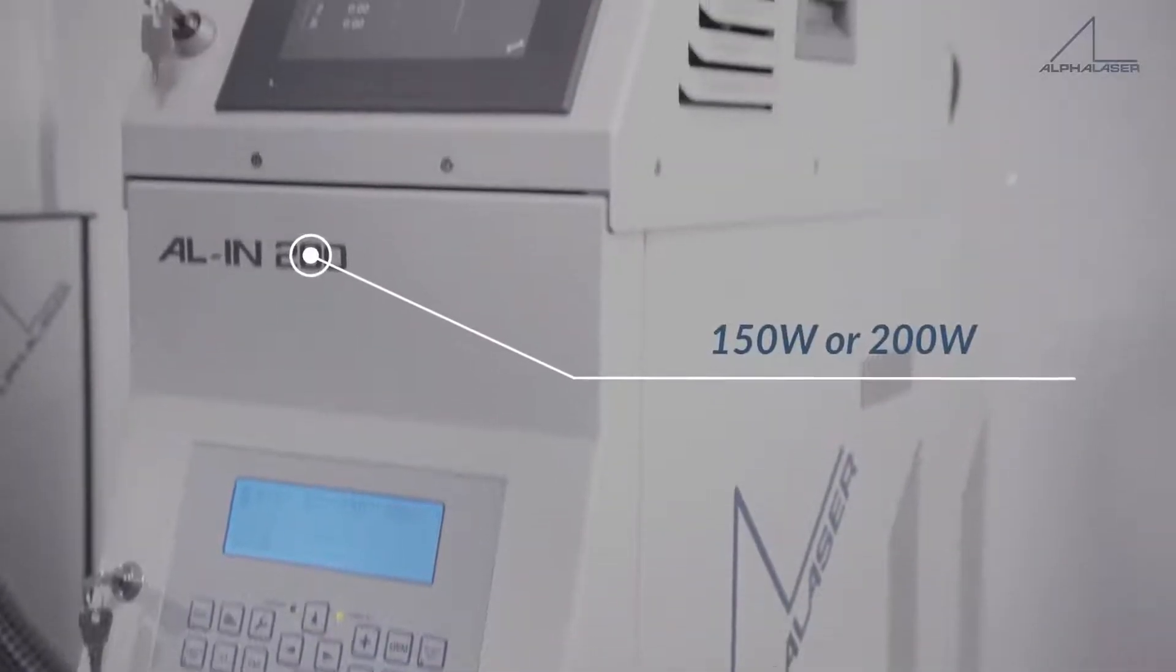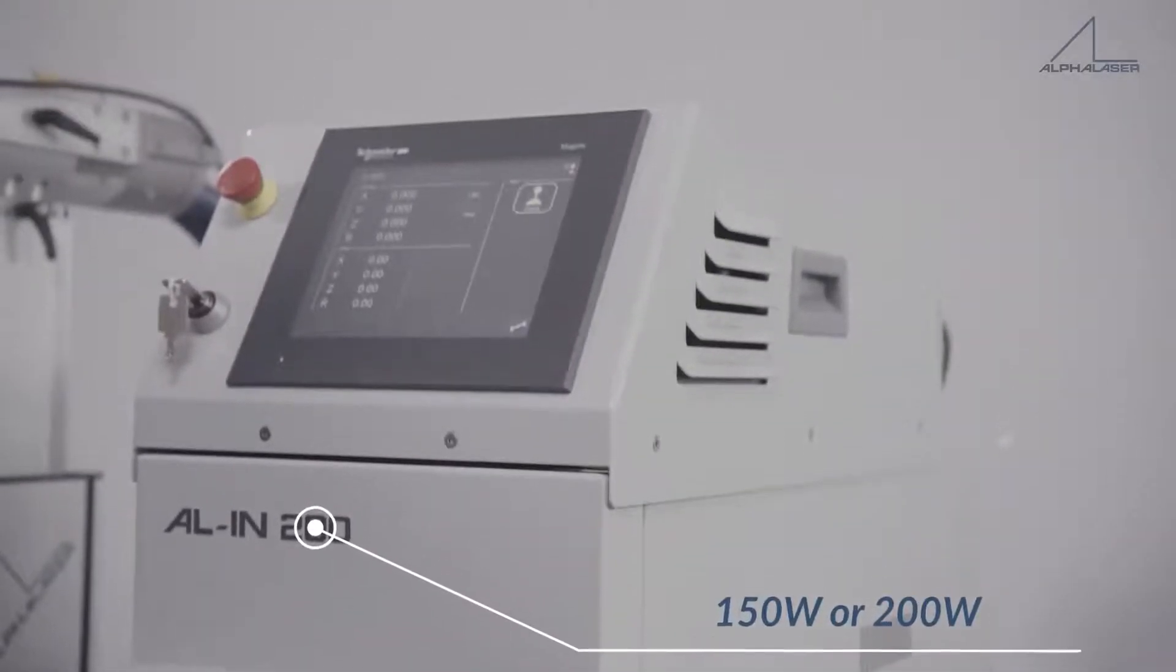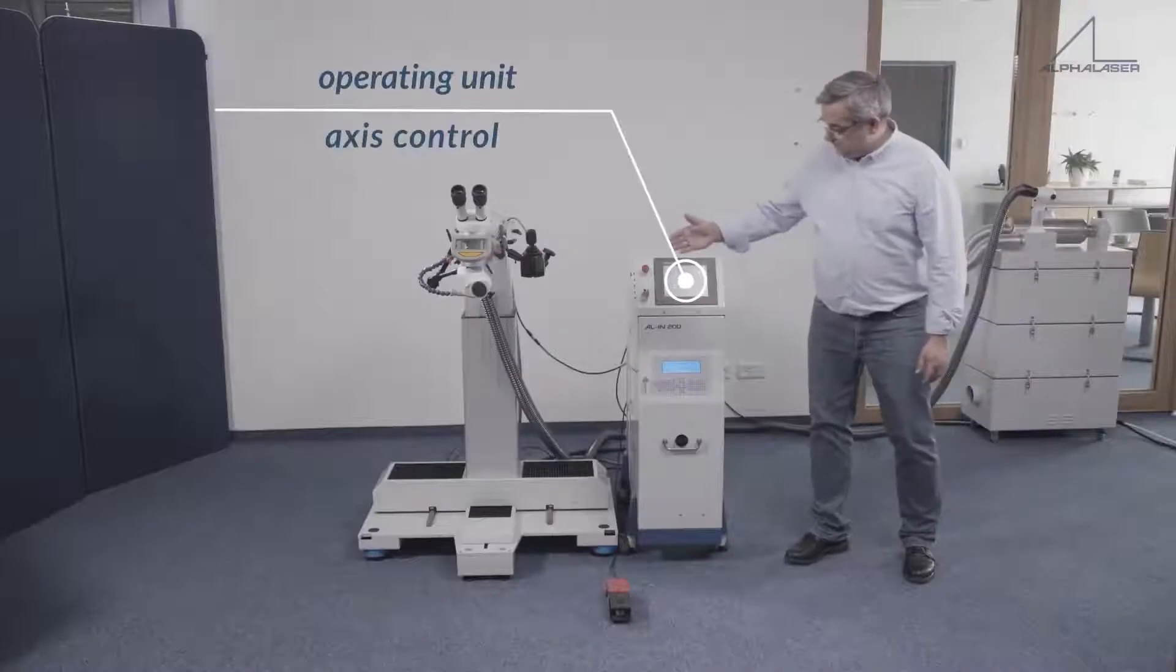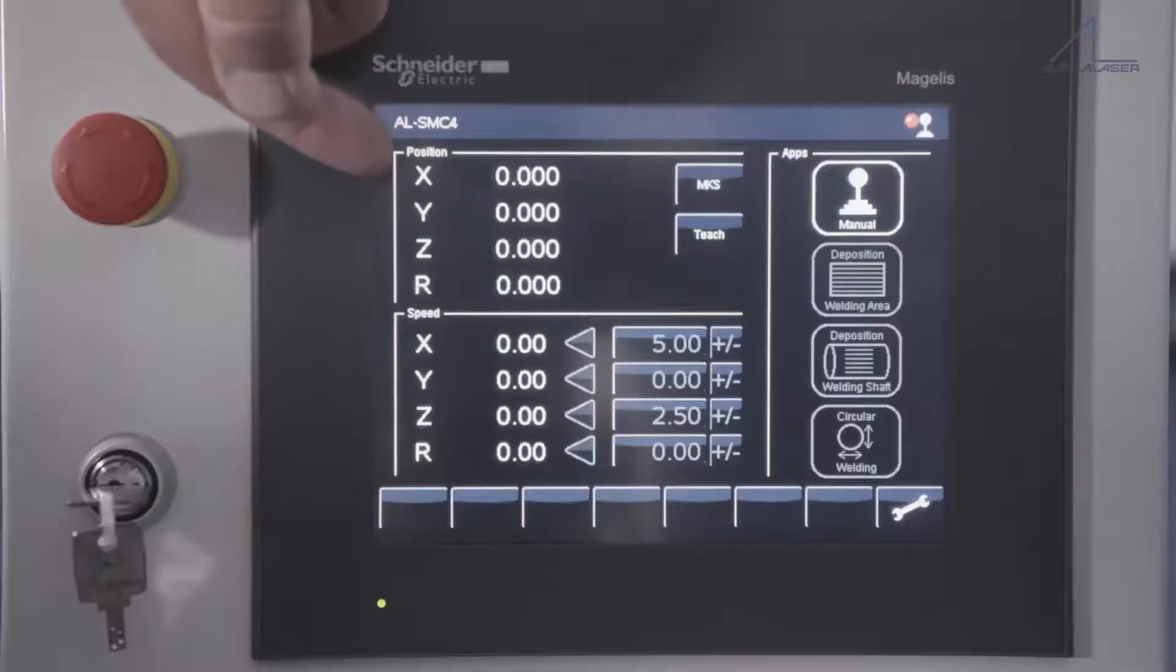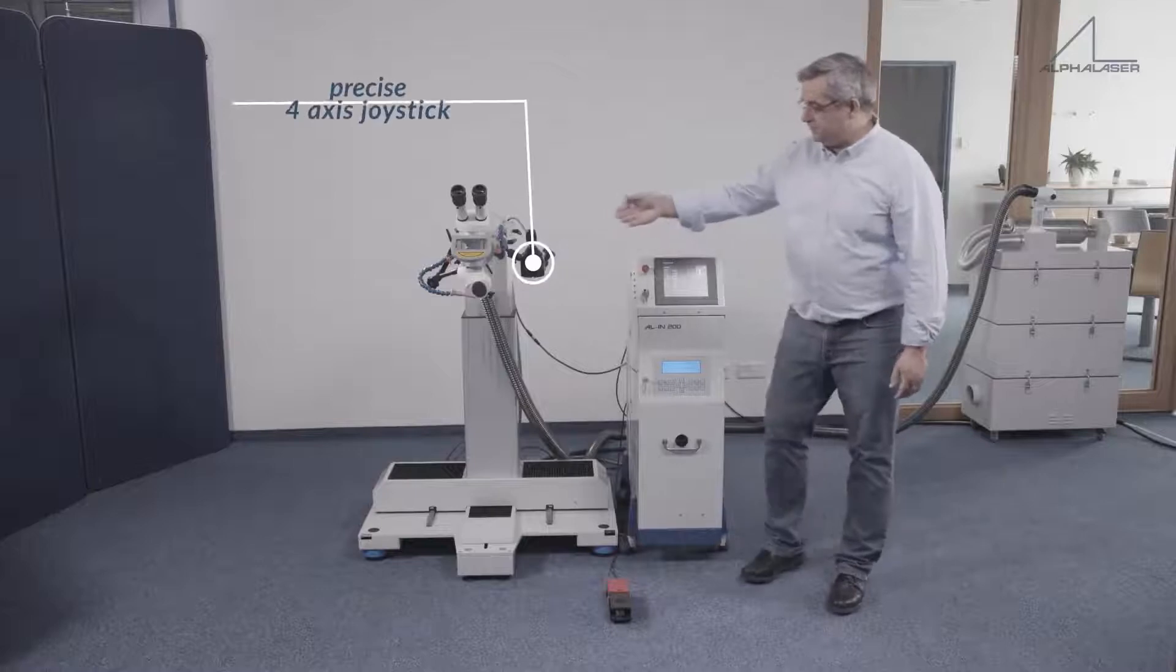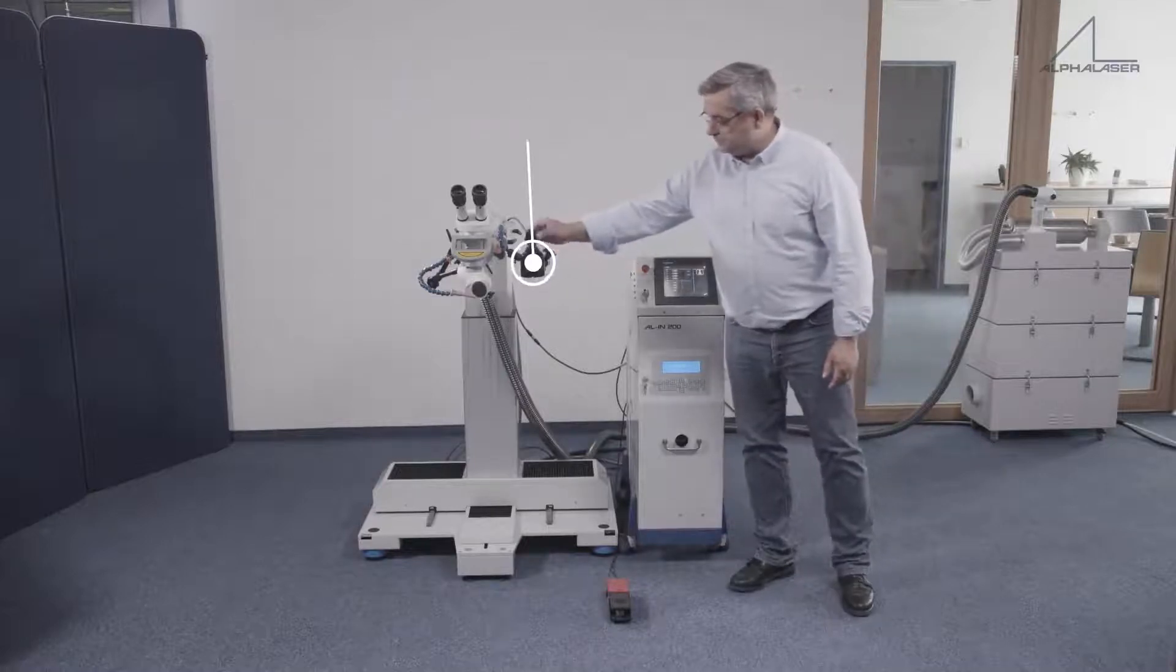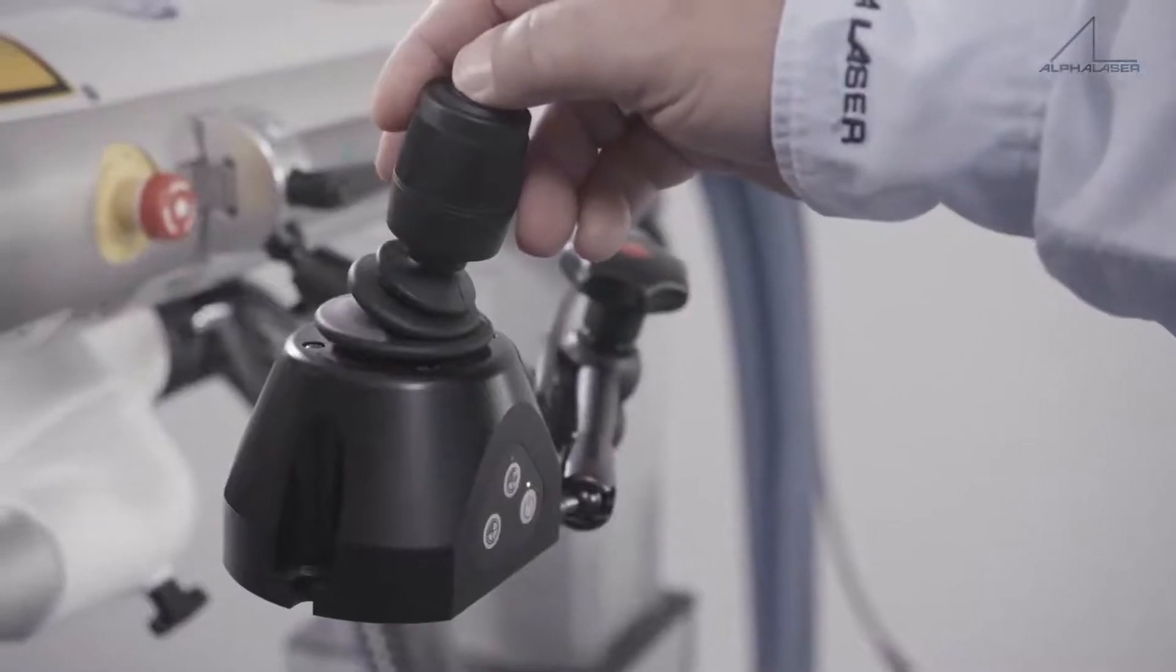The laser system consists of a laser with 150 or 200 Watt average laser power, an operating unit for controlling the axes, and a precise responsive joystick that moves in X, Y and Z axes.